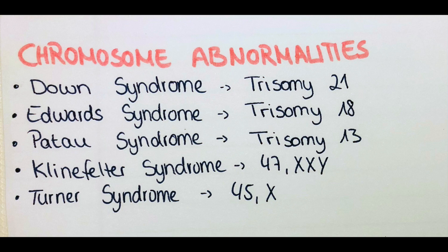Klinefelter syndrome is also known as 47XXY, because males present with two X chromosomes and one Y chromosome — one additional copy of the X chromosome. Males affected by that present with infertility, less body hair, and gynecomastia, which is the development of breast tissue in males.